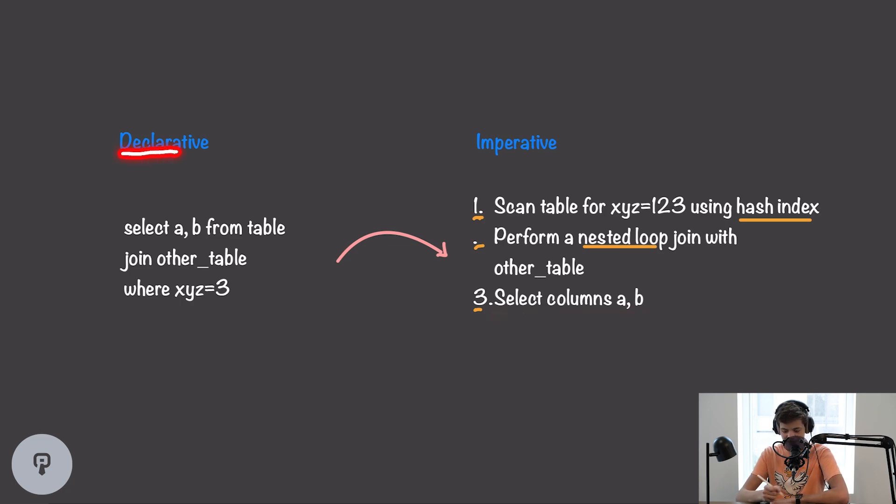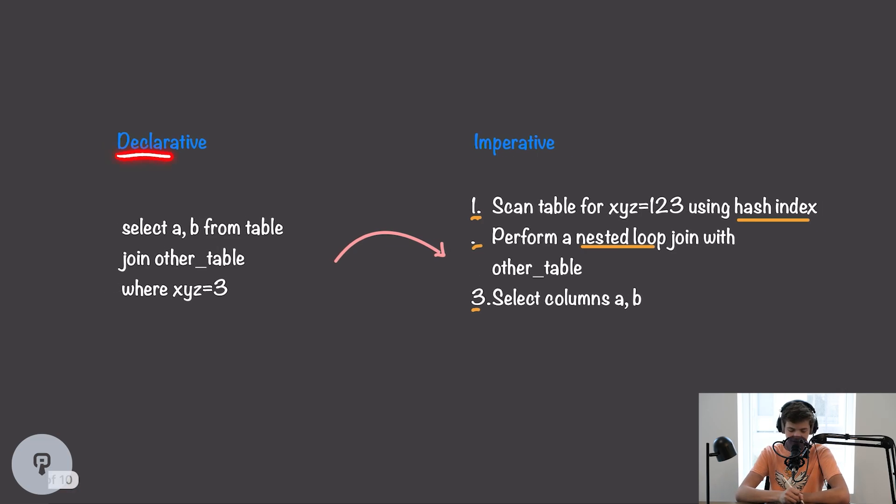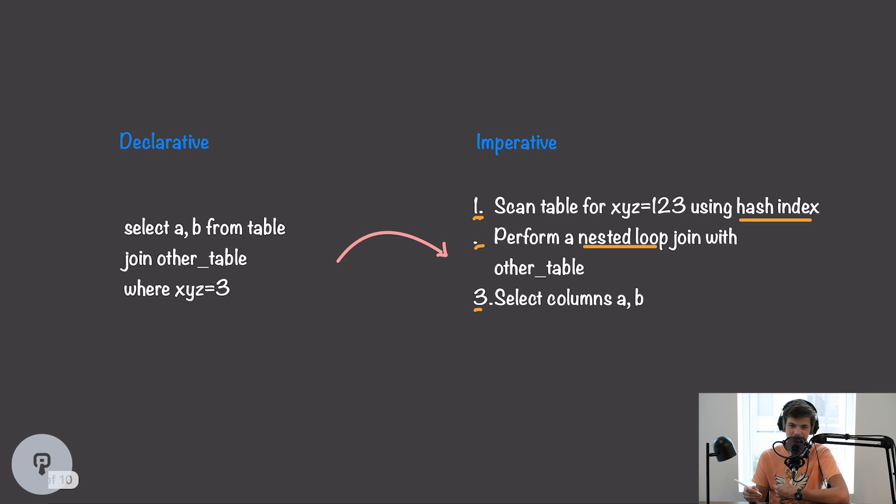The difference between this declarative statement and this imperative statement is that with the imperative statement, we're giving specific steps, things we want to execute in a certain order, and we're telling it exactly how to perform each of those steps. Whereas with our declarative statement, we're leaving it up to the database to choose those things. As somebody who's querying a database, it's certainly a lot easier if we have this declarative way of talking to our database, where we're just telling it what data we want to get out, and not how exactly we want it to get that data. But internally, the database is going to have to translate this declarative statement into something that tells it exactly what to do.